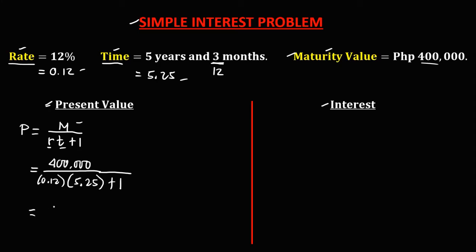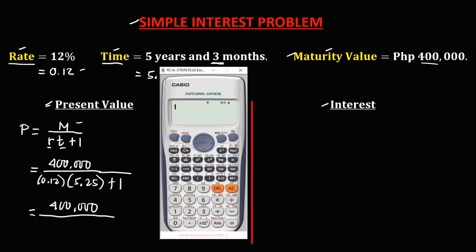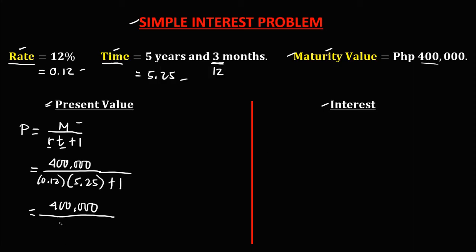Then simplify. We have 400,000 over 0.12 times 5.25, then plus 1 equals 1.63.